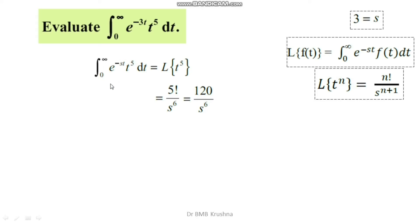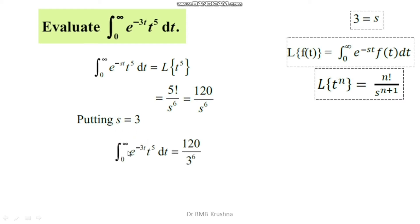This improper integral contains s, and on the right-hand side we have the expression in terms of s. Putting s = 3, we get the integral from 0 to infinity of e^(−3t) · t^5 dt equals 120 divided by 3^6. After simplification, since 120 = 3 × 40 and 3^6 = 3 × 3^5, the 3s cancel, giving us 40 divided by 243.